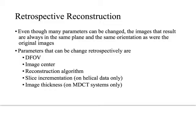Anytime we're doing a retrospective reconstruction, the parameters can be changed. For example, if we scan a patient and the display field of view is too small, we can retrospectively reformat to increase it. We can change image center retrospectively, change the reconstruction algorithm — say from bone protocol to soft tissue — and we can also change slice incrementation and slice thickness. That's only on multi-detector systems.